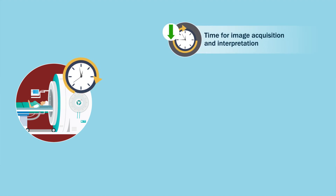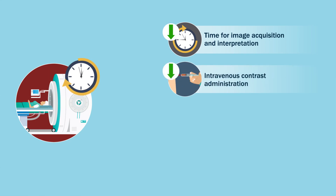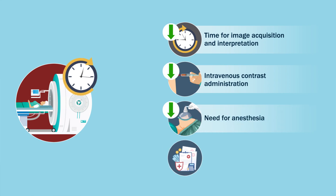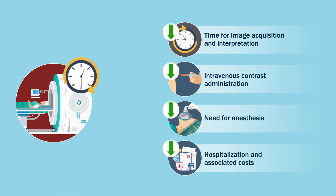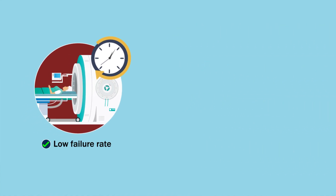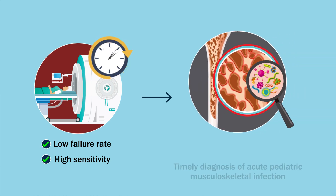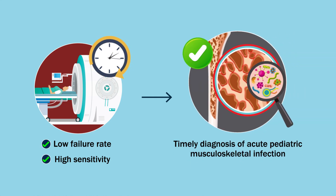Overall, the RAPID MRI protocol significantly decreased the time required for image acquisition and interpretation, eliminated the need for contrast while significantly reducing anesthesia needs, and reduced the length of hospital stays and associated costs. The low rate of failure and high sensitivity of the RAPID MRI protocol make it a valuable tool for the timely diagnosis of acute pediatric musculoskeletal infection.